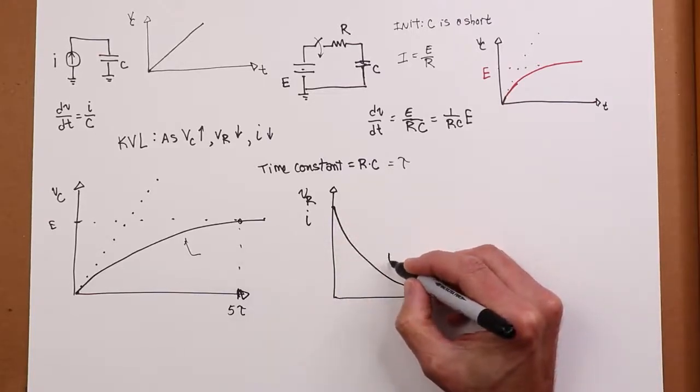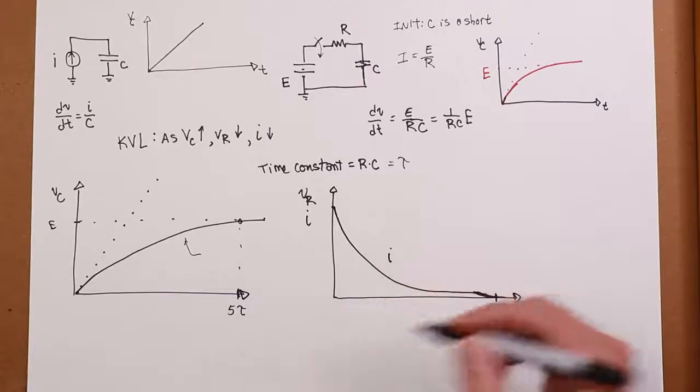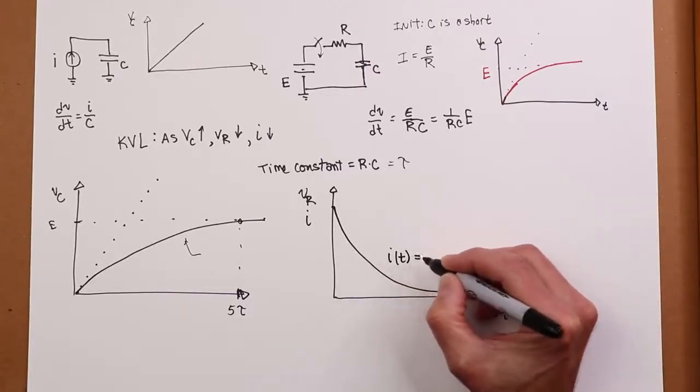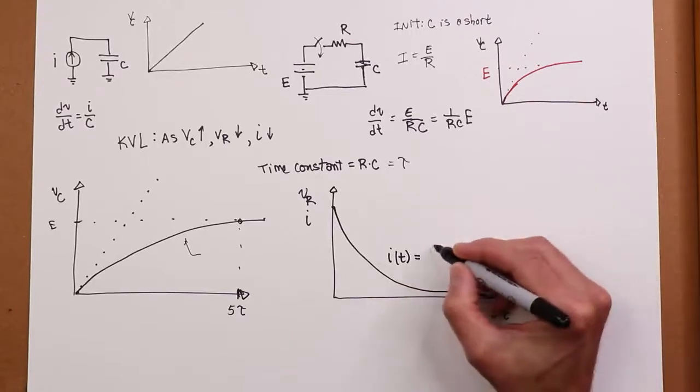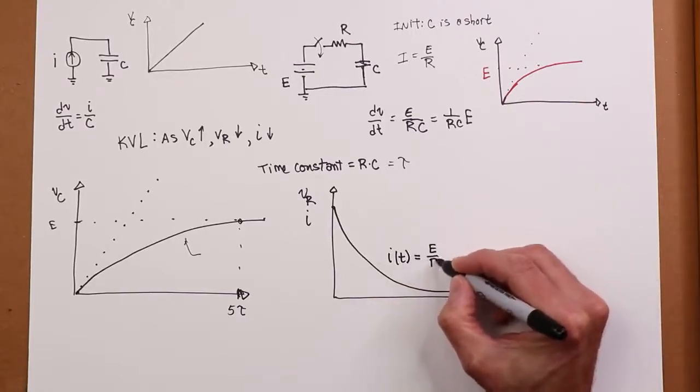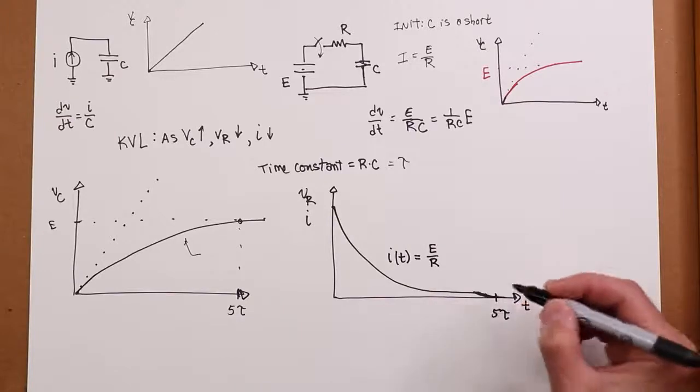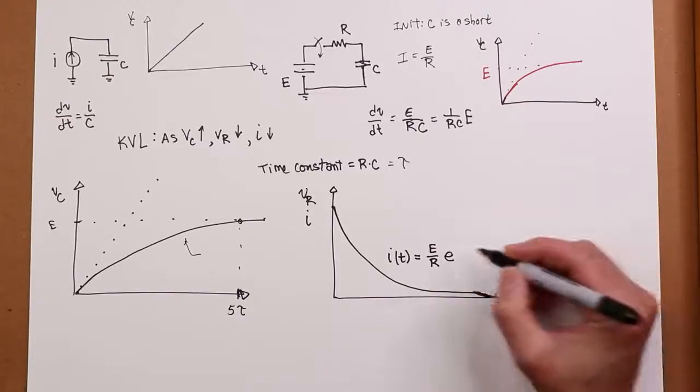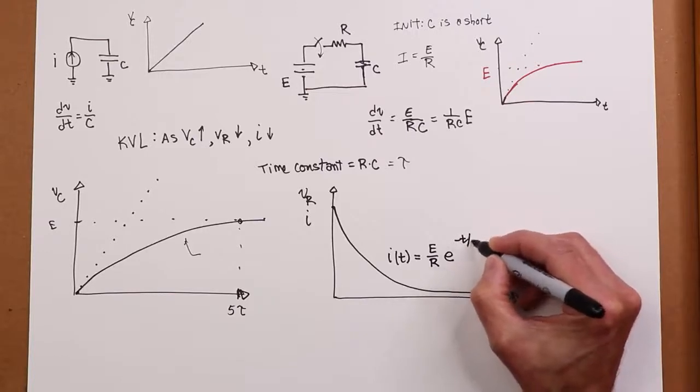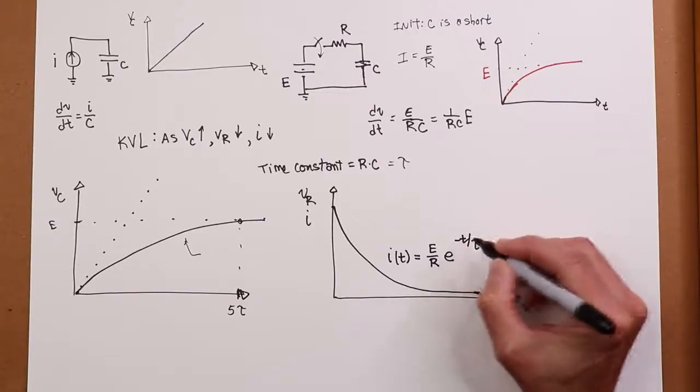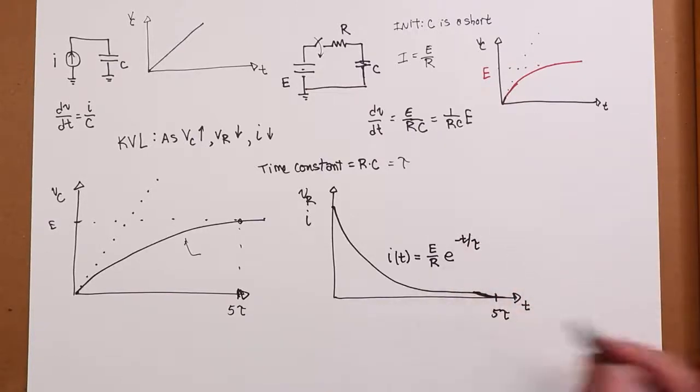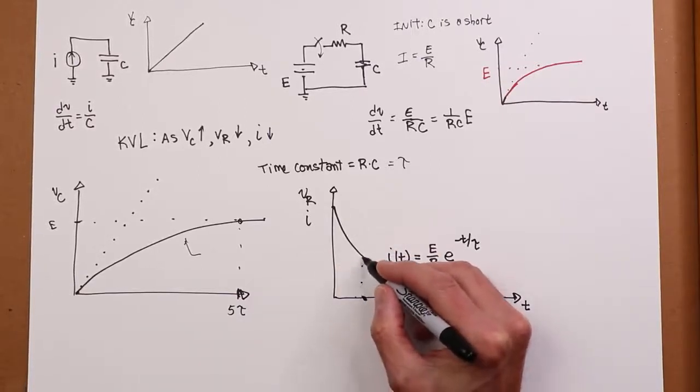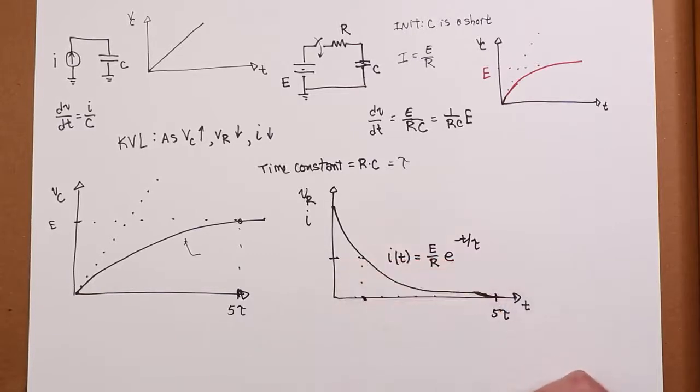So the maximum value, if I was going to look at the current on here, in other words, what's the current as a function of time? It's going to be the maximum value, which is E over R, times little e, the base of natural logs, raised to the minus T over tau.